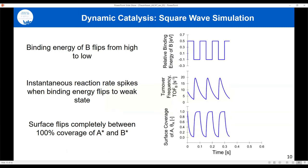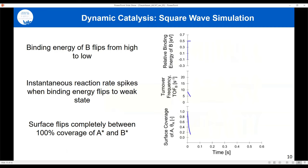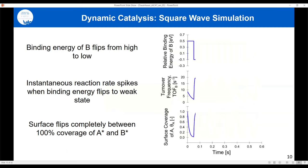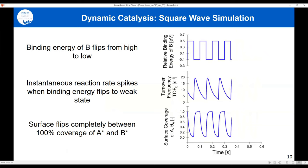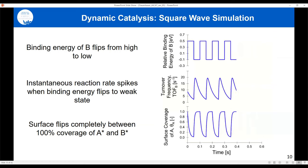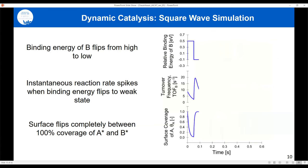In a simple scenario flipping binding energy of B* from strong to weak with an oscillation of 0.6 eV, as you flip from strong to weak binding, the instantaneous turnover frequency shoots up very quickly then comes back down as the surface is depleted. We oscillate between a surface covered in A and one covered in B — every flip pushes material off the surface, and when you average that reaction rate out, you get something significantly higher than static conditions.